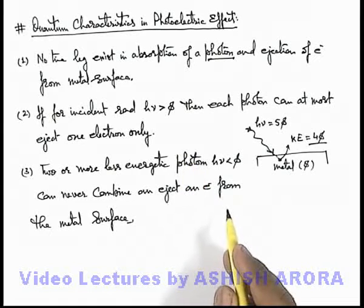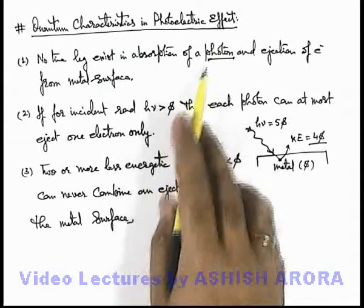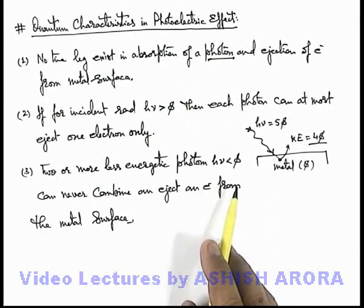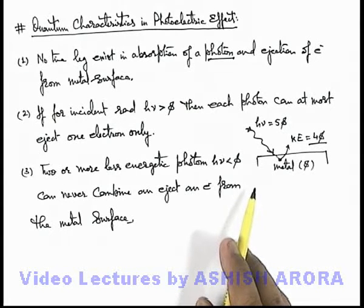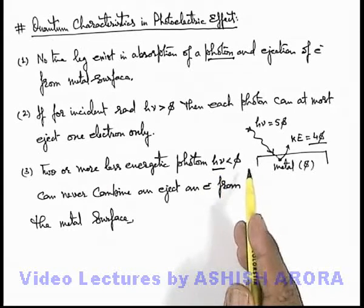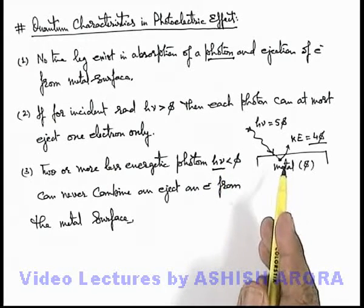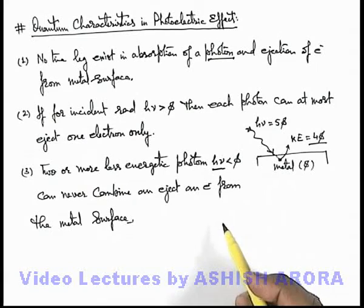According to Heisenberg's uncertainty principle, when some energy is absorbed by a particle in quantum format — that is, by a photon — then for a given duration it can never absorb another photon, or it is not available for a given duration for utilization of its energy. So we can say if less energetic photons are present, no matter how intense the light beam is and no matter how many photons we supply, electrons will never be ejected. These are the 3 points considered as quantum characteristics in the photoelectric effect.